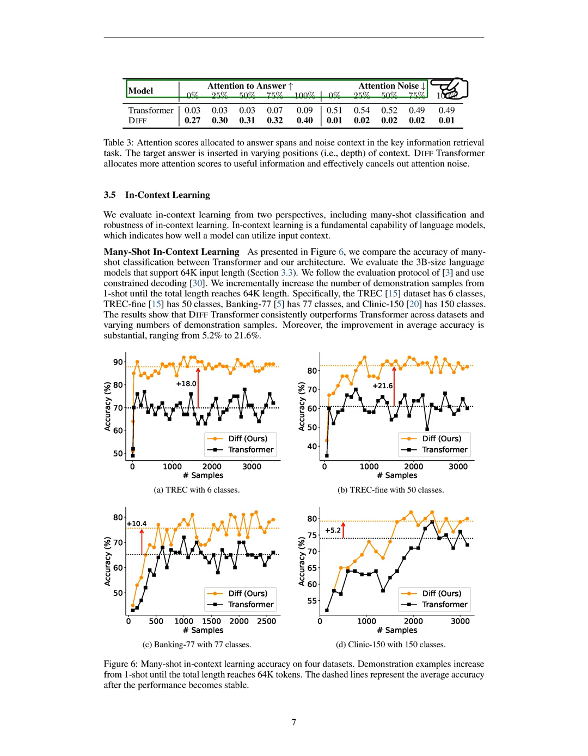Section In Context Learning. In this section, we evaluate in-context learning from two angles, many-shot classification and the robustness of in-context learning. In-context learning is a key ability of language models, showing how effectively a model can use the input context. For many-shot in-context learning, we compare the accuracy of many-shot classification between the transformer model and our architecture, as shown in the figure. We focus on 3 billion parameter language models that can handle 64,000 input tokens. Following a specific evaluation method, we gradually increase the number of demonstration samples from 1 up to the maximum length of 64,000 tokens.